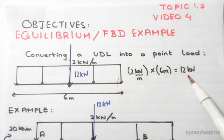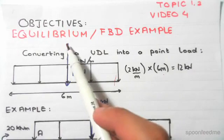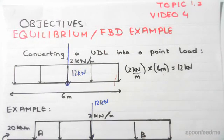Since we've converted this UDL into a point load, the point load lies exactly in the center of the UDL and it's equal to 12 kilonewtons. This is how we convert a UDL into a point load.